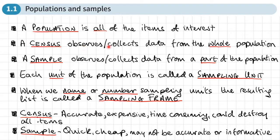A census observes and collects data from the whole population. So that may be a whole population of people or it might be a whole set of items. So it may be a factory that's producing, let's say, tins of soup and they will collect data from every tin of soup if it's a census.